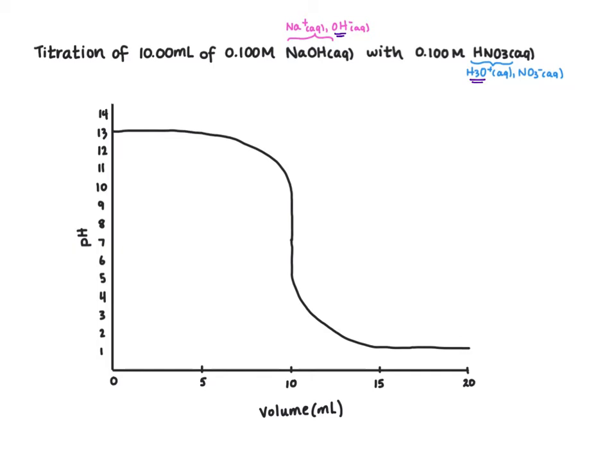So the net ionic equation is going to be hydroxide as our base plus hydronium as our acid forming water. And the OH is our sample, the H3O is our titrant.